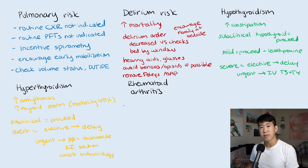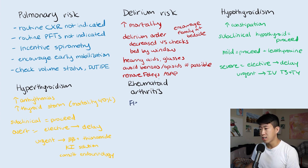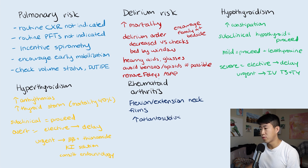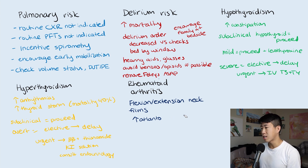Finally, if any patient is coming in with rheumatoid arthritis, get flexion and extension neck films before surgery. There is an increased risk of atlantoaxial subluxation, and this is very useful for the anesthesiologist to know when intubating — they need to know how far they can safely extend the patient's neck.